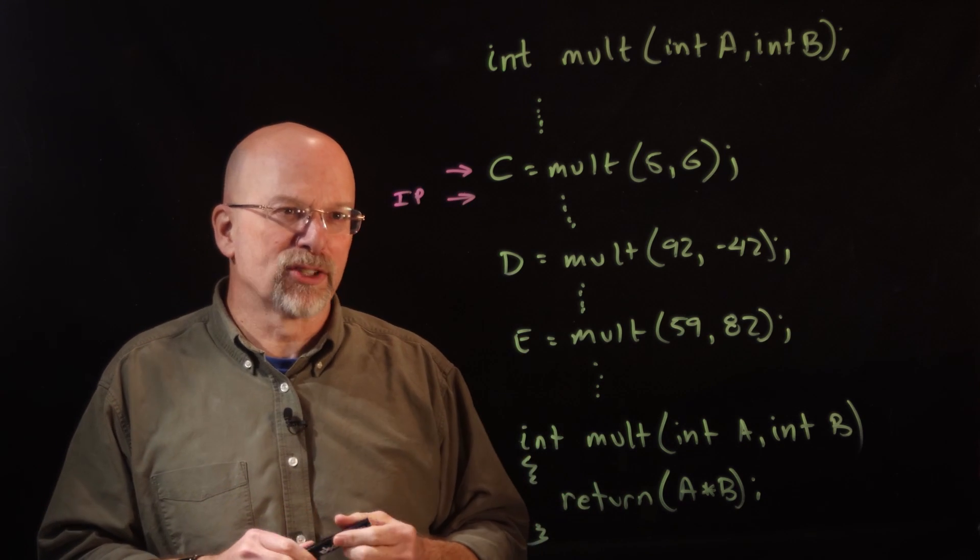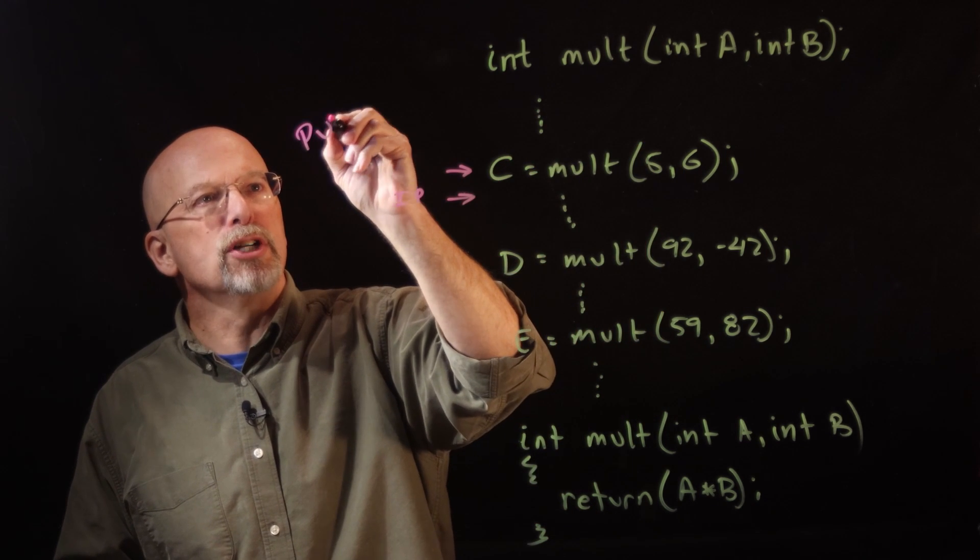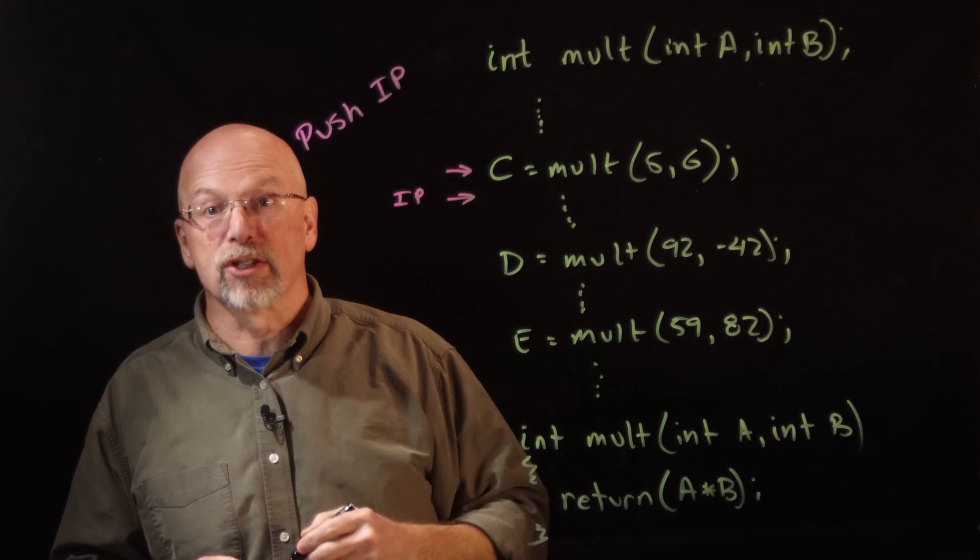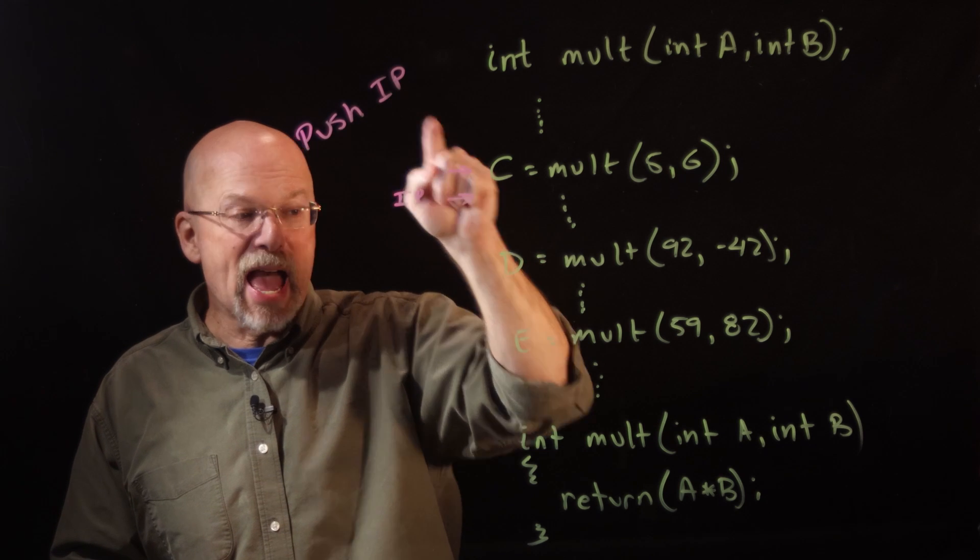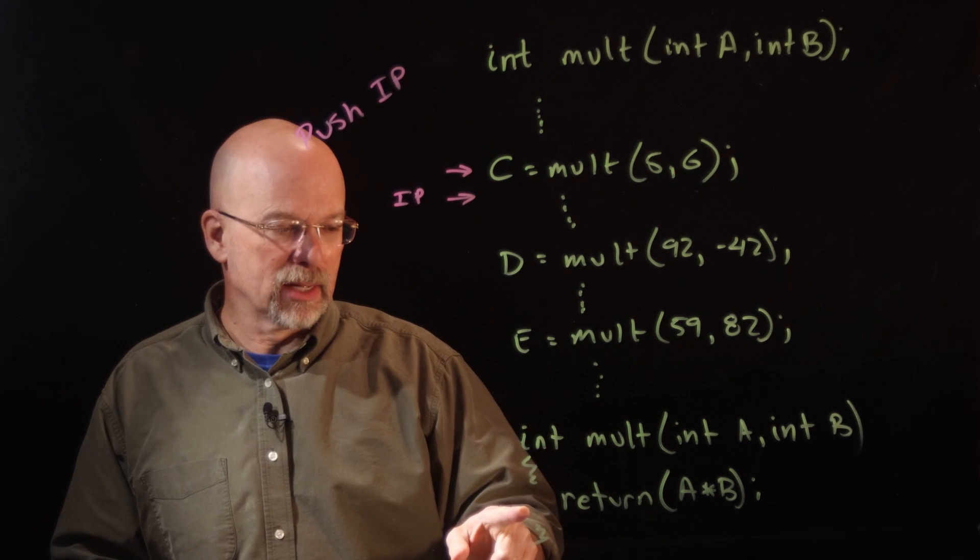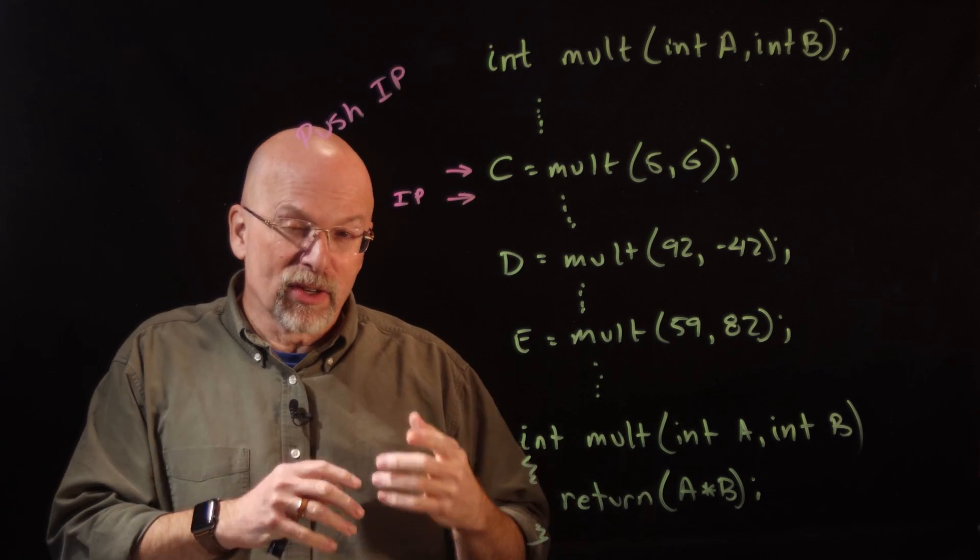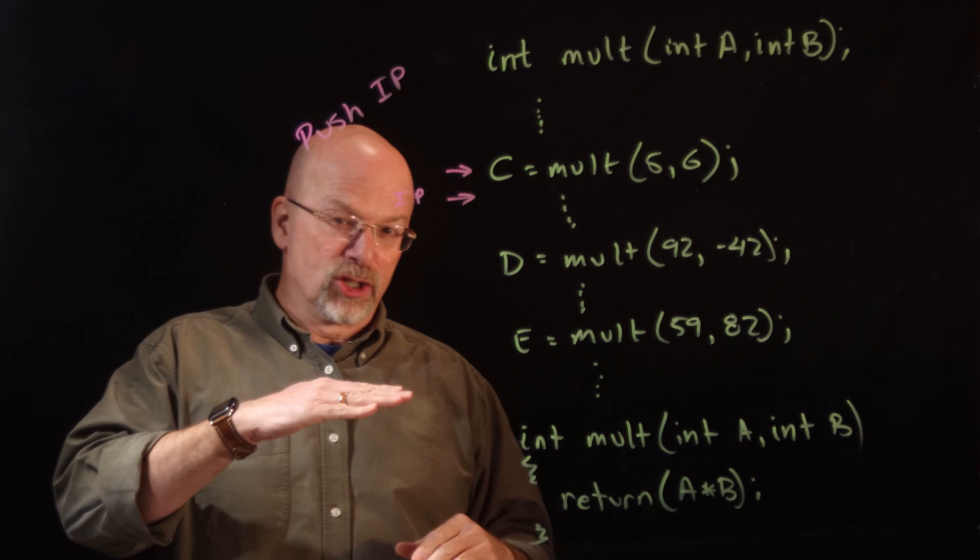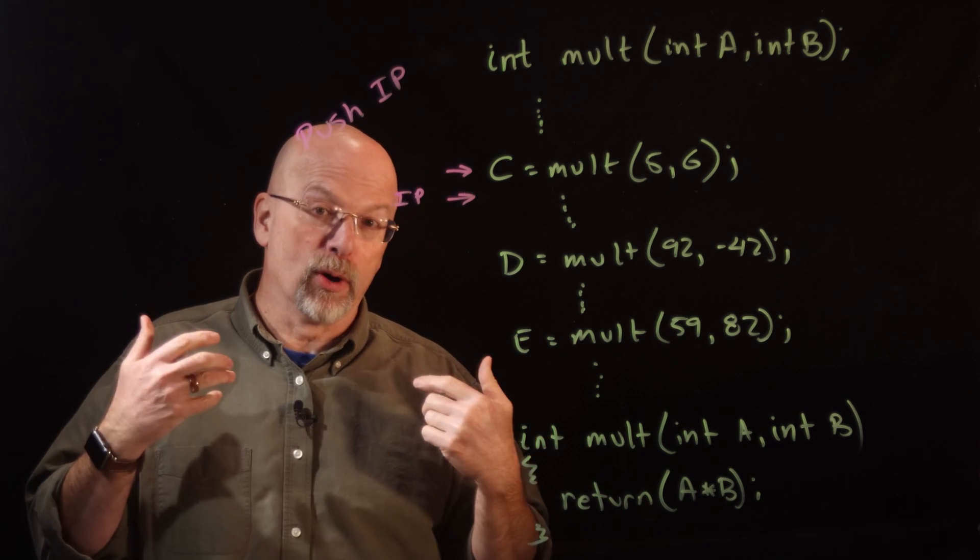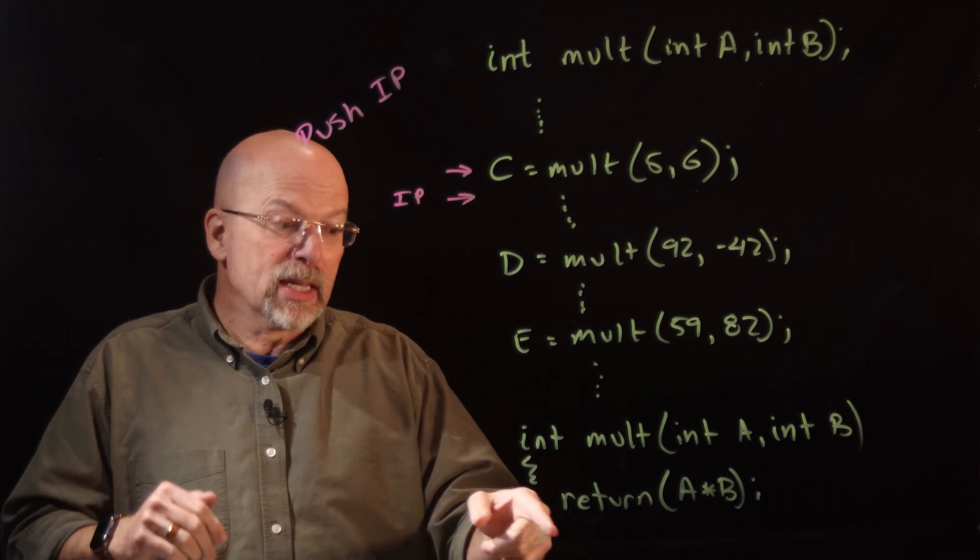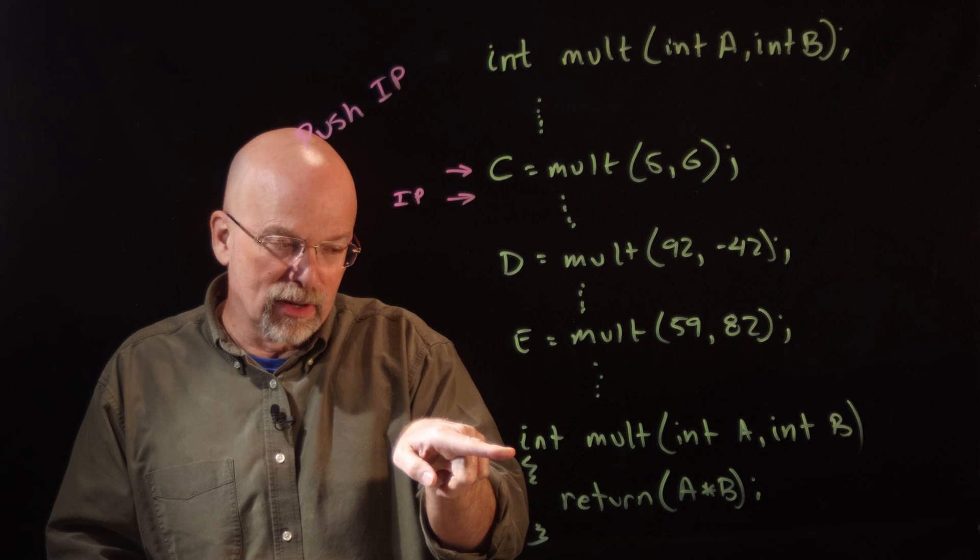What we do as part of this call here is we push IP, the instruction pointer or program counter, and that way it's on the stack when we jump into this function. Now it is possible that inside of this function we're going to use the stack, but remember our plate analogy: as long as I take off exactly the same number of plates that I put on, then the stack pointer will be pointing to the exact same memory location it was when we came into the function.